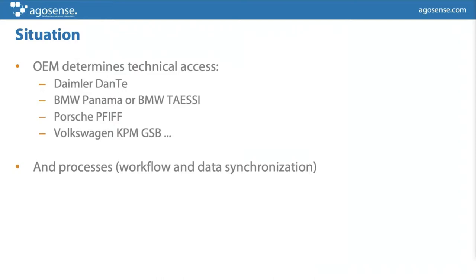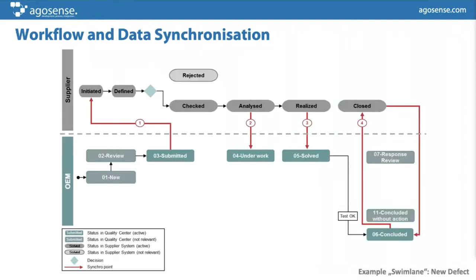To give you an impression of how this looks, here's a slide showing state transitions for one of our customers — for example, how different state transitions are connected between OEM and supplier. This is just one simple example for a new defect submission. It can be as complex as you can imagine, varying for different projects and different OEMs. This shows how workflow and data synchronization are managed and should be represented in a data exchange process to be automated.